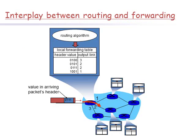Every router has a forwarding table, but how does it get configured? Routing algorithms determine the values that should be inserted into the router's forwarding table. The routing algorithms might be centralized — running on a central site and downloading routing information to each router — or distributed, with a piece of the routing algorithm running on each and every router.